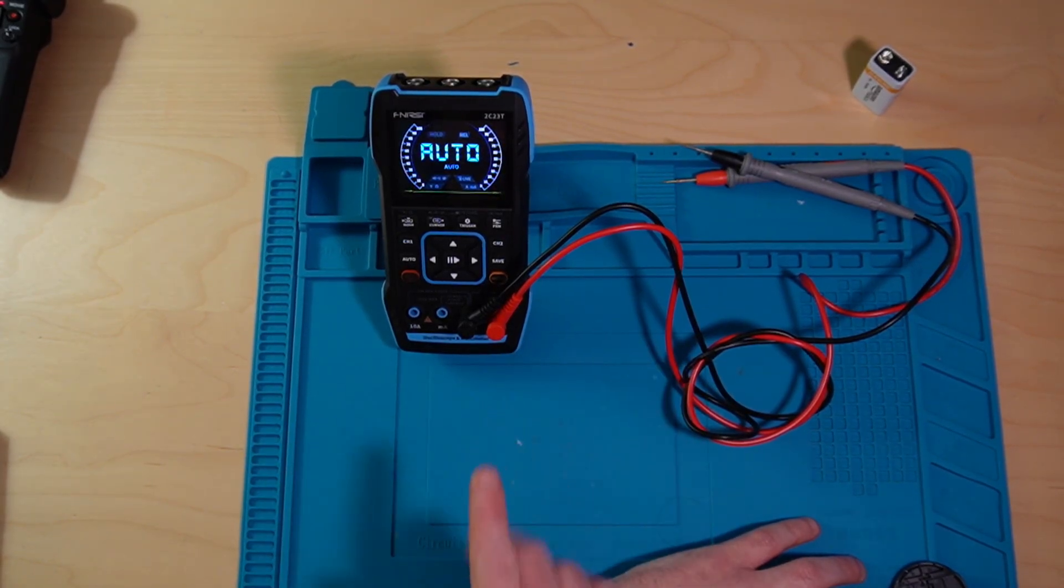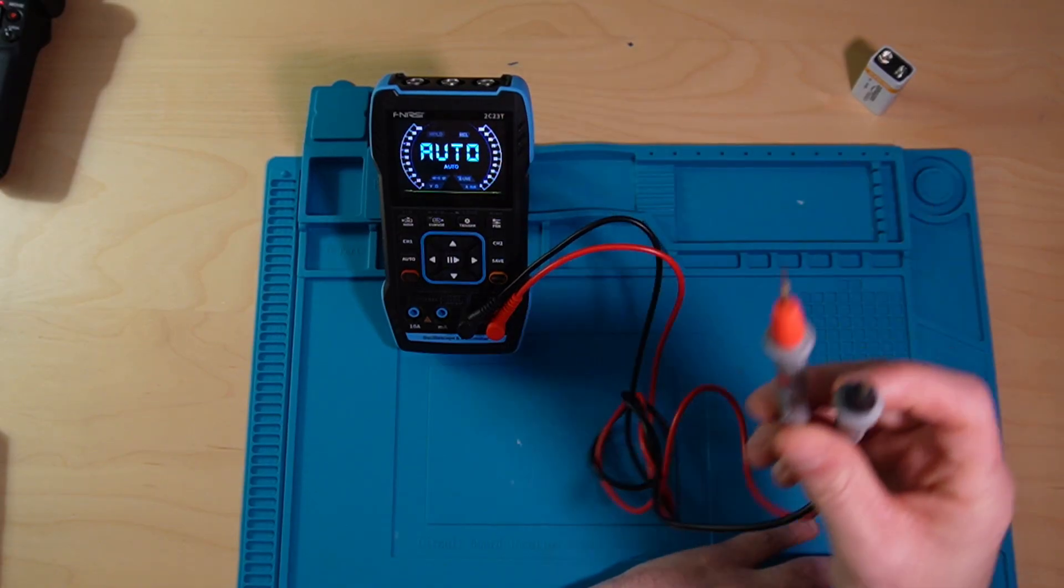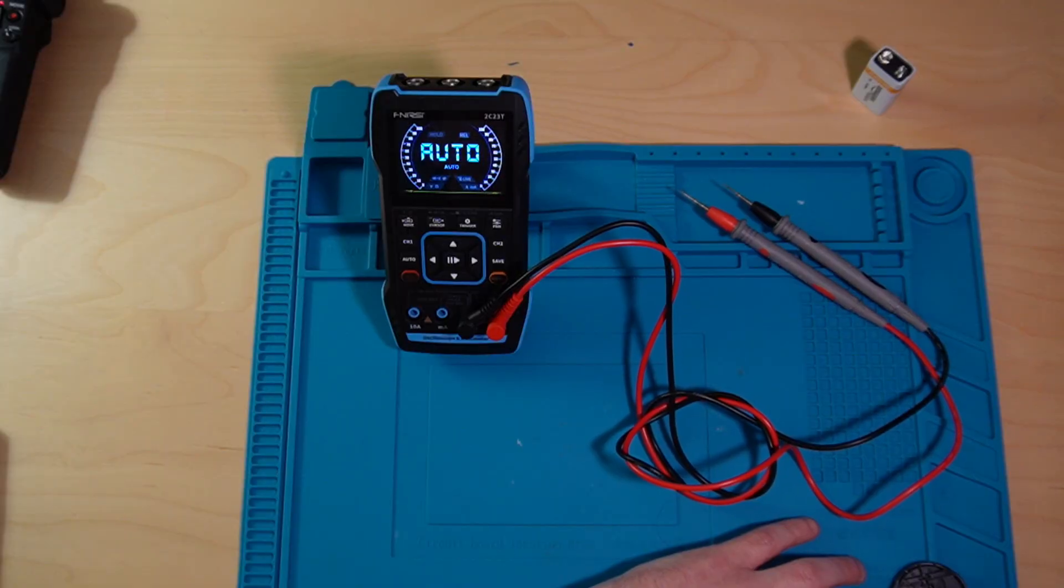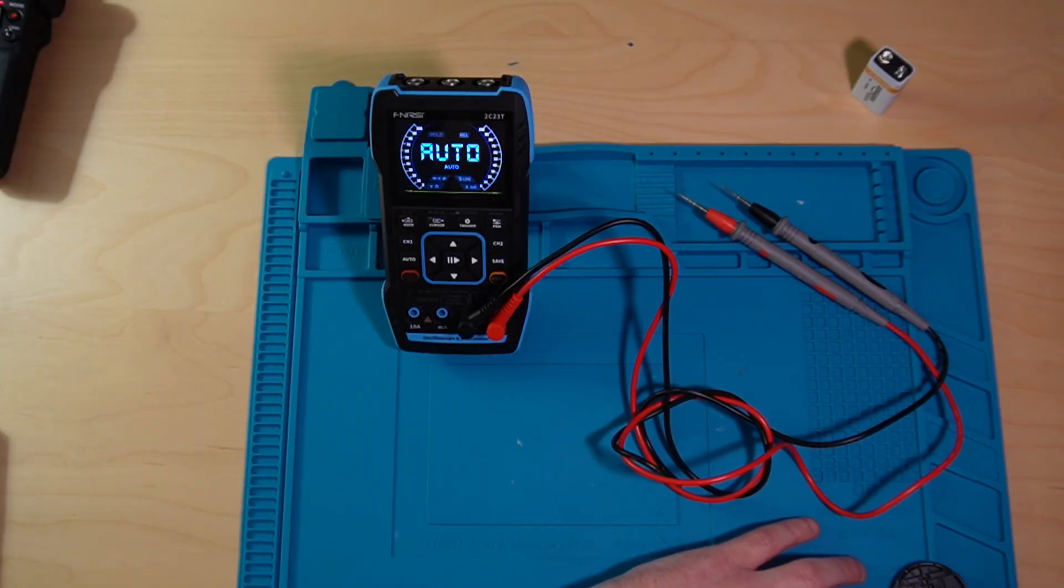Basically, the multimeter is able to determine that while against my arm, the two probes were able to transmit a signal between them. And my skin or body provided a resistance. But there was able to make it a connection.